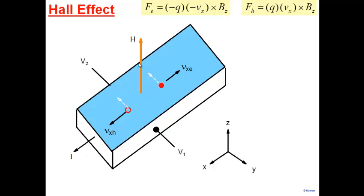This process leads to piling up of holes on one side. For a p-type semiconductor, holes start accumulating there. As they pile up, an electric field sets up — positive charge on one side must be compensated by negative charges elsewhere. An electric field in the y-direction develops, and in steady state the force due to this electric field cancels the Lorentz force from the magnetic field.